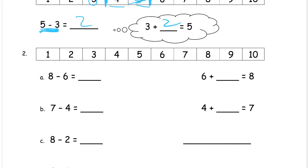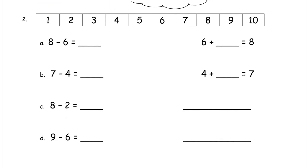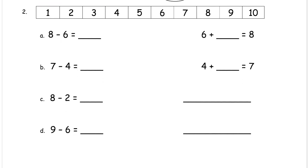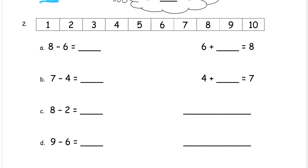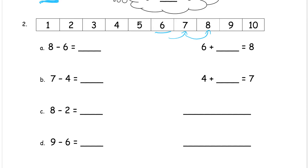These numbers are all going to be small single-digit numbers — they're close together. And I'm going to use the number line for all of these. Eight minus six. For that one we would start at the six, right here, and see how far away the eight is: one, two — two away.